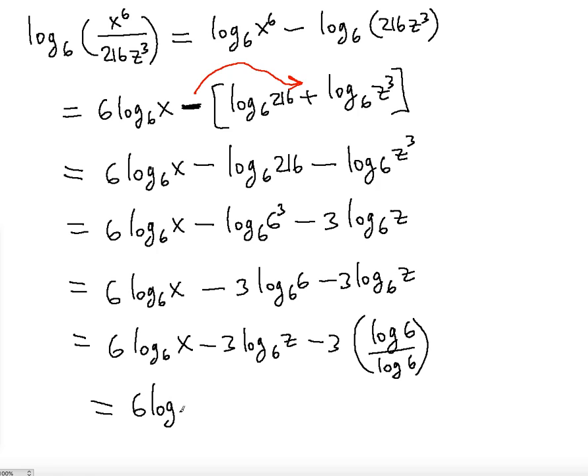So this is going to be 6 log base 6 input x minus 3 log base 6 input z minus 3 times 1. 3 times 1 is simply 3. So this is your final answer, and this is the successful expansion of the original logarithm. Thank you so much for watching, I hope this was helpful, see you in the next videos.